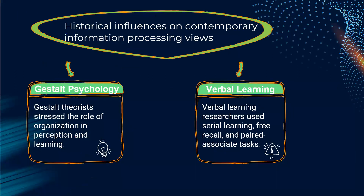The historical influences: there are two historical influences on modern information processing views — these are Gestalt psychology and verbal learning. Gestalt theorists stress the role of organization in perception and learning, while verbal learning researchers use serial learning, free recall, and paired associate tasks.